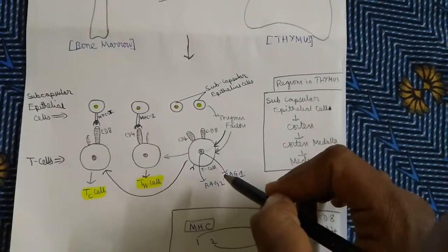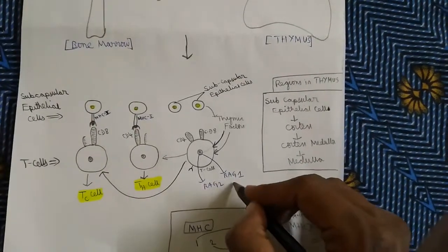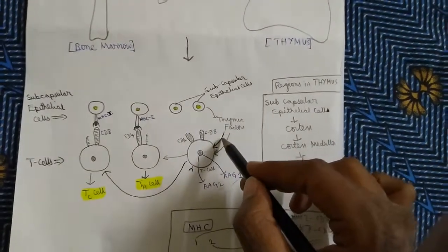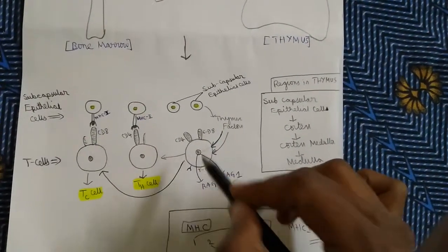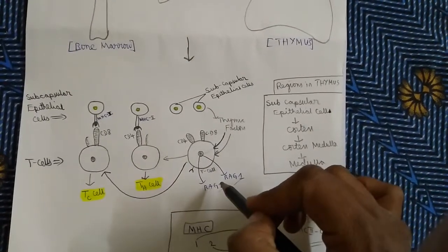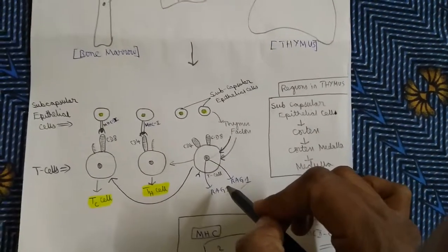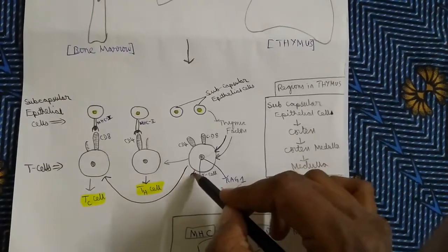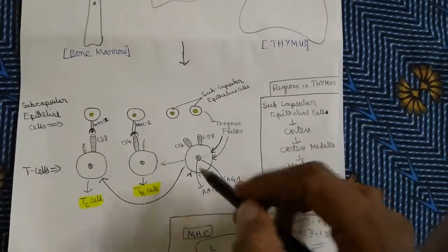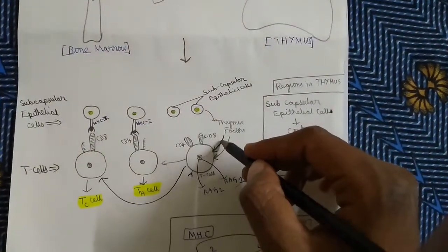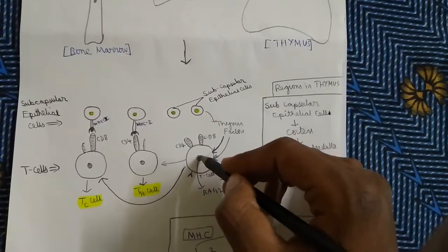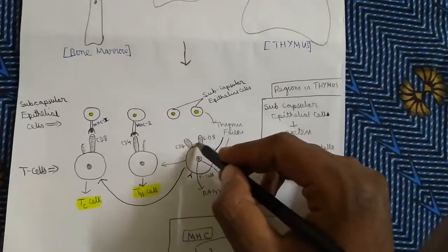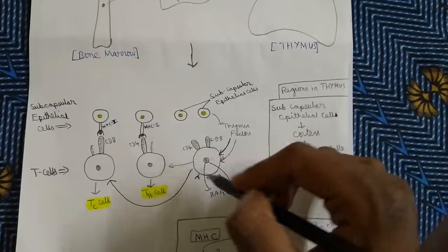Three kinds of enzymes are produced. Firstly, the enzymes RAG1 and RAG2 are produced when thymic factors penetrate into the nucleus of the T-cell. RAG1 and RAG2 are very essential for the formation of the T-cell receptor. Another factor also penetrates into the DNA, and as a result, CD8 and CD4 receptors are formed on the surface of T-cells.